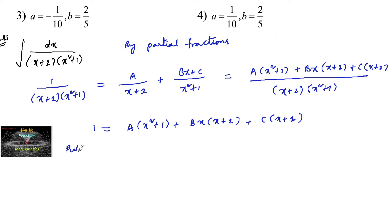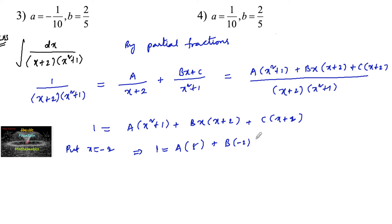Now put x = −2. This gives 1 = A((−2)²+1) + B(−2)(−2+2) + C(−2+2), which simplifies to 1 = A·5 + 0 + 0. So 5A = 1, meaning A = 1/5.